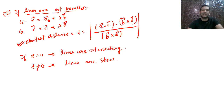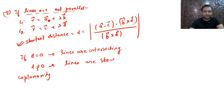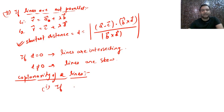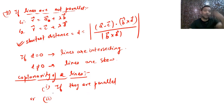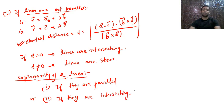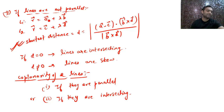Next topic: coplanarity of two lines. Two lines are coplanar in two cases: first, if they are parallel — parallel lines are always coplanar; second, if they are intersecting. You can check intersection using the shortest distance formula: if shortest distance = 0, the lines are intersecting and hence coplanar. This ends the Lines section; next we move to Planes.